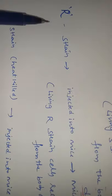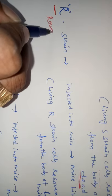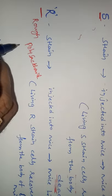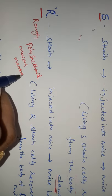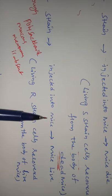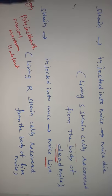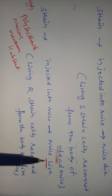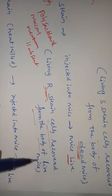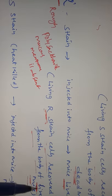Similarly, they conducted an experiment using R-strains. R is the rough strain — rough because of the absence of the polysaccharide mucous membrane. When the R-strain was injected into the mice, the mice stayed alive, because R is not responsible for causing the disease. The living R-strain cells were then recovered from the body of the live mice.